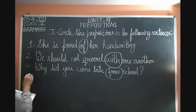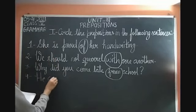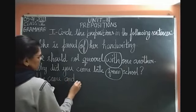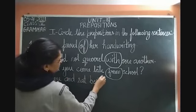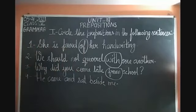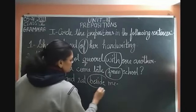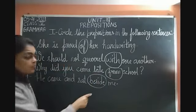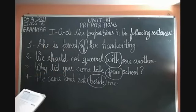Fourth: He came and sat beside me. 'He' and 'me' — the word that shows the position is 'beside.' So 'beside' is the preposition — it tells us where he sat, beside me. Make a circle on 'beside.'